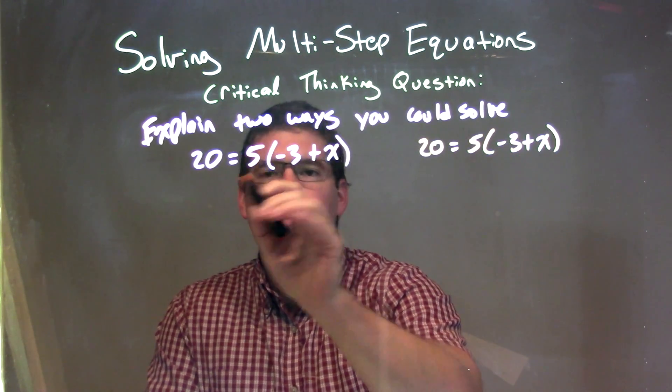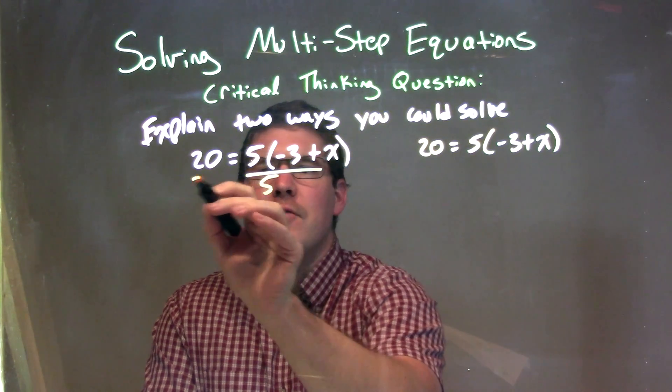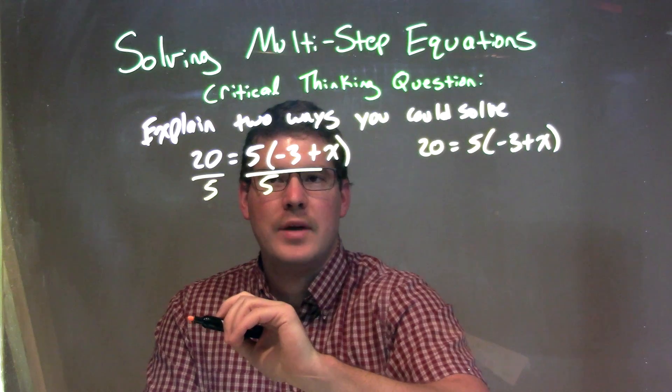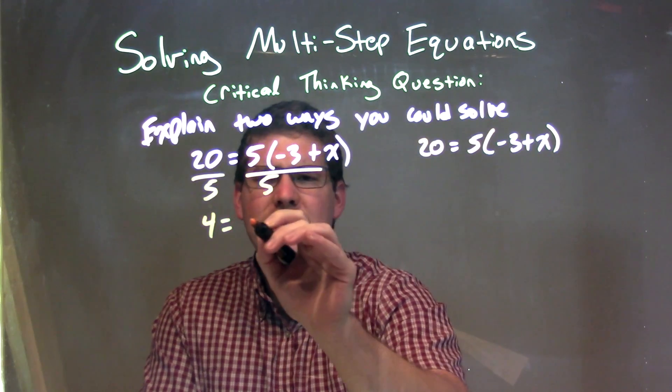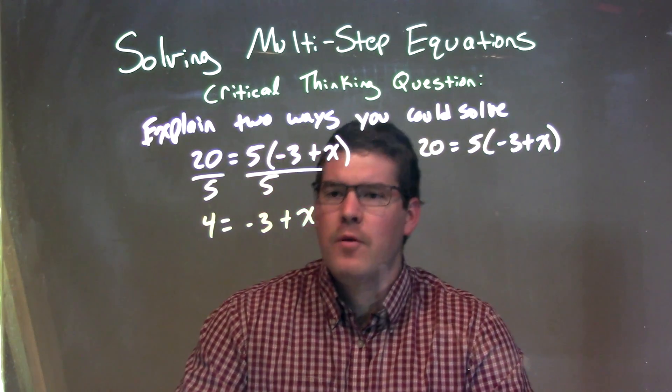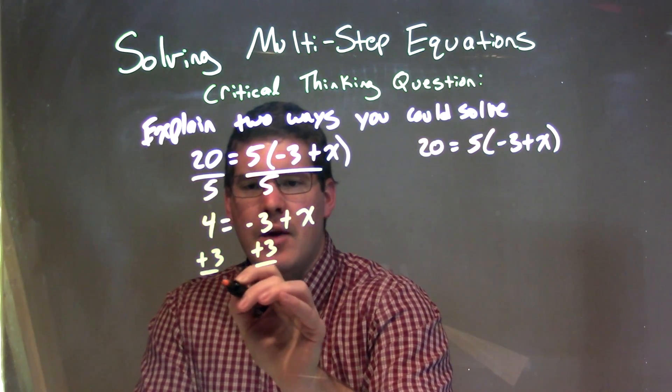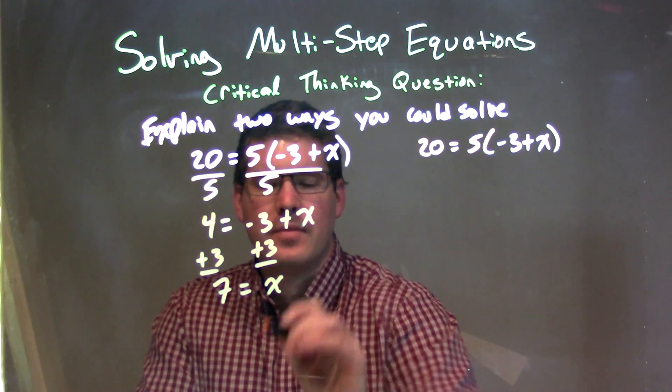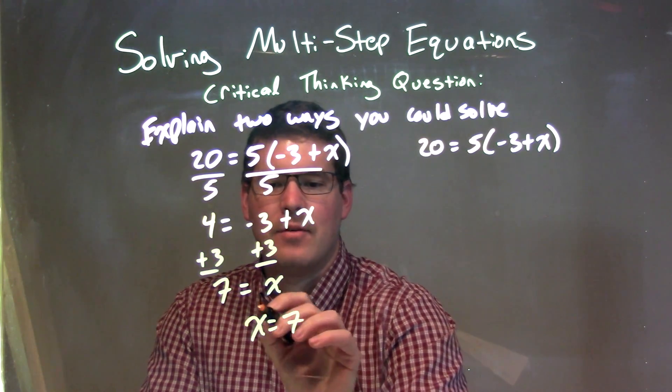So the first one here, first method I mentioned, let's divide by 5. If we divide by 5 to both sides, it's the opposite of multiplication right there. 20 divided by 5 is 4, and that's left with -3 + x on the right. From there, I can add 3 to both sides, get x by itself, and we have 7 = x. We can rewrite that to be x = 7, have x come first.